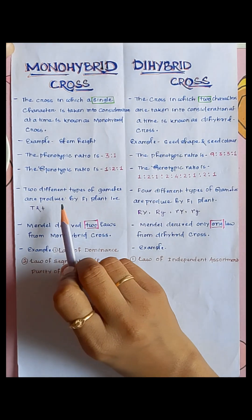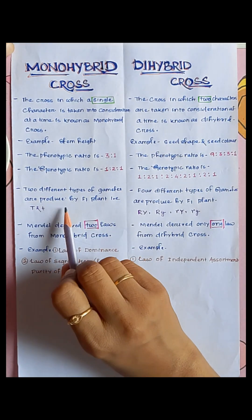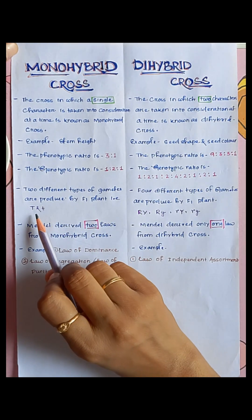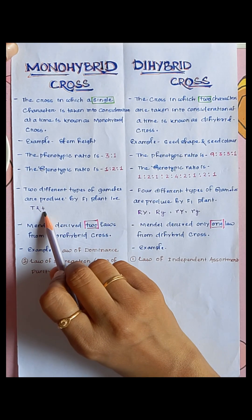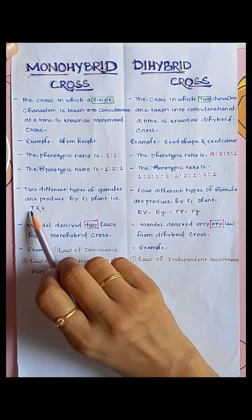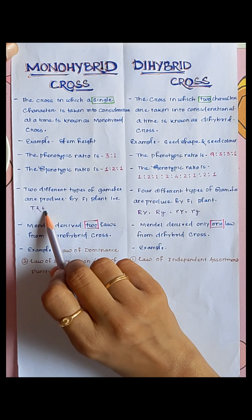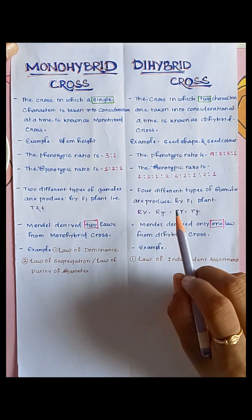Two different types of gametes are produced by the F1 plant in a monohybrid cross — that is, capital T and small t, meaning the tall plant allele and the recessive allele.